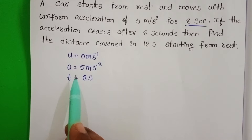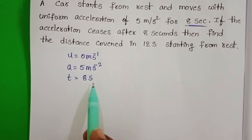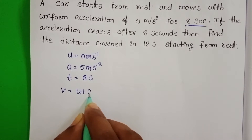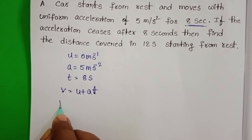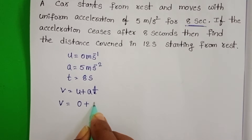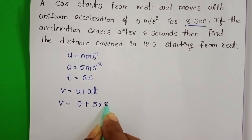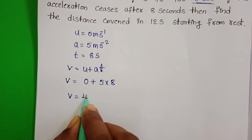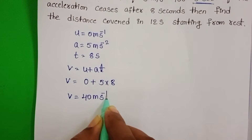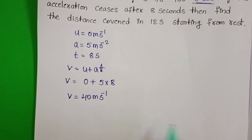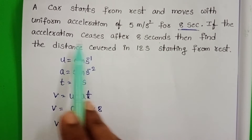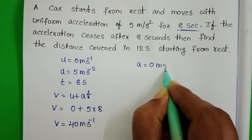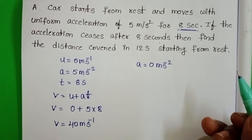We find the final velocity of the car after 8 seconds using the equation of motion: V = U + AT. So V = 0 + 5 × 8. The final velocity of the car after 8 seconds is 40 meters per second. But after 8 seconds, acceleration ceases — that means acceleration equals 0 after 8 seconds.